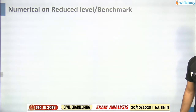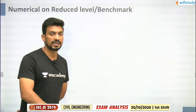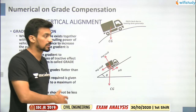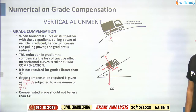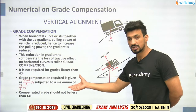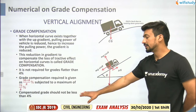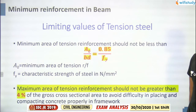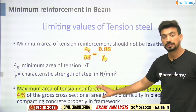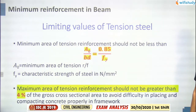A numerical on reduced level or benchmark was asked - simple question to find height of instrument or benchmark value. For grade compensation, formulas are 30 + R/R or 75/R. Compensated grade should not be less than 4%. For minimum reinforcement in beams, it was asked; maximum area of tension reinforcement should not be greater than 4%.